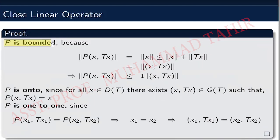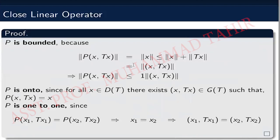Now we prove that P is a bounded operator. The norm of P(x, Tx) equals the norm of x, since the projection extracts x. And the norm of x is less than or equal to the norm of x plus the norm of Tx, which equals the norm of the ordered pair (x, Tx). Therefore, the norm of P(x, Tx) is less than or equal to the norm of (x, Tx), and we can write it is less than or equal to 2 times the norm of (x, Tx). This satisfies the definition of a bounded operator, so P is bounded.